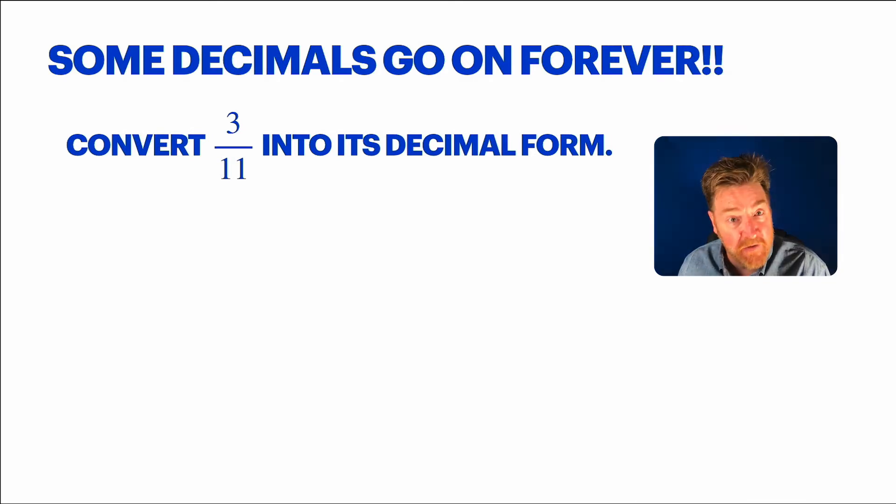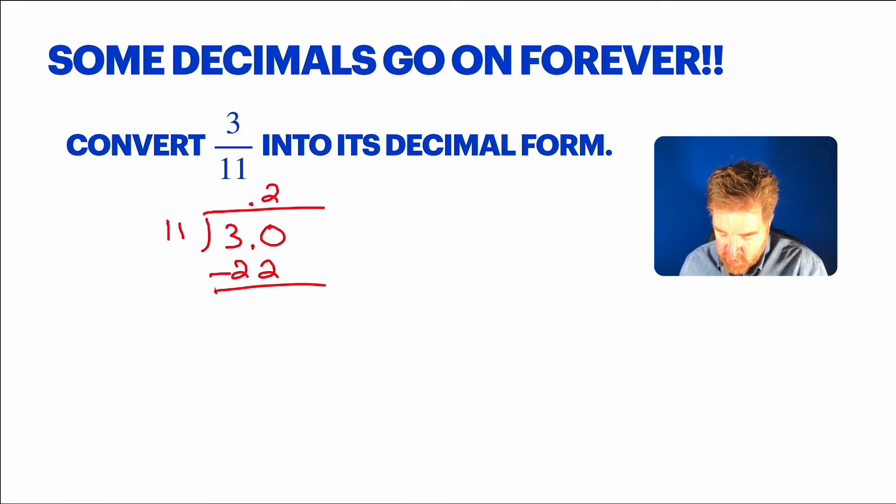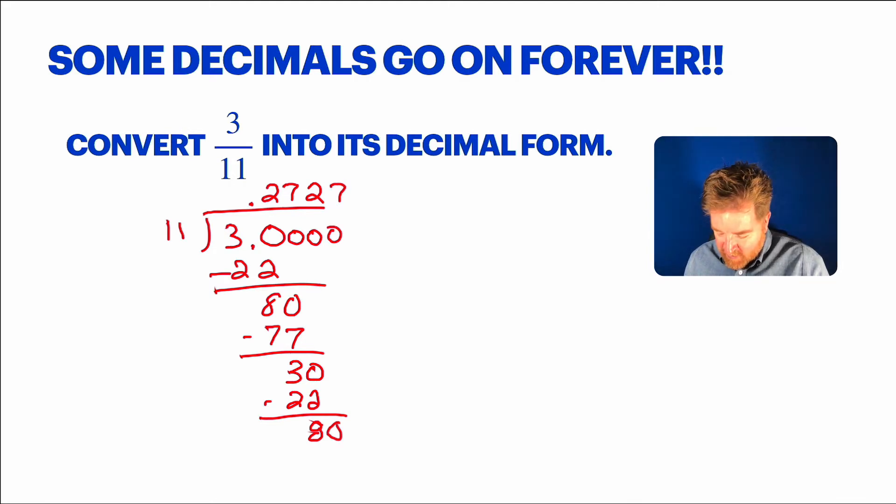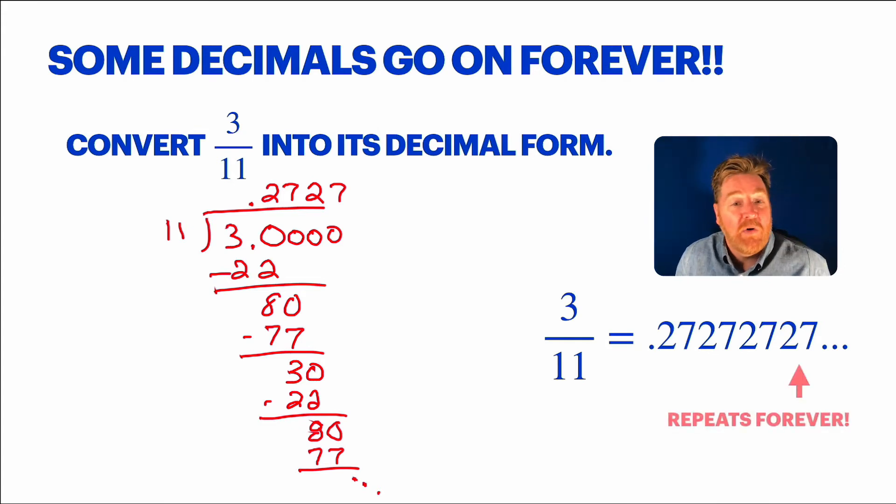Let's do the division. 3/11. 11 doesn't go into 3, so drop that decimal point in the zero. Goes 2 times, 22. Leaves you with 8. Put that down. 11 into 80, or 80 divided by 11. We get 7. 77, 3, oh wait a minute. There's that 30. We saw that before. 11 into 30 goes 2 times. Oh man, wait. We just saw that. If we put this down, 11 into 8 seven times again. This is just going to continue this over and over again, too. So, 3/11 is 0.272727. The 27 is just going to repeat forever. Man, there are lots of these. Lots of these repeating decimals.